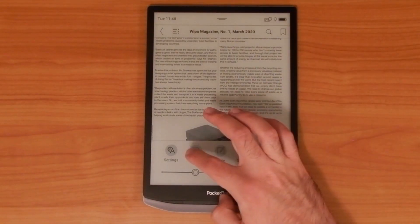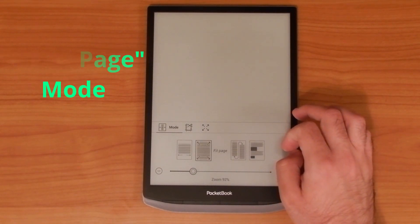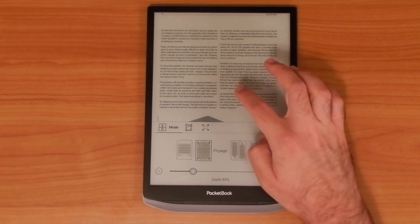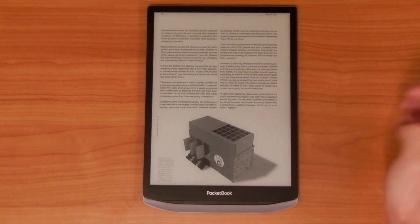Fit to Page, as you might imagine, fits a single page to the device's screen. This is great, but it can make the text quite a bit harder to read as everything appears smaller.